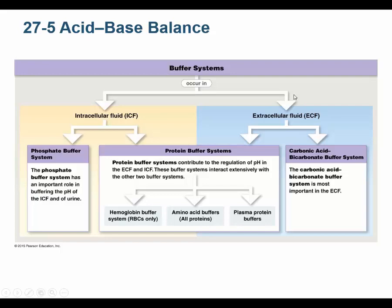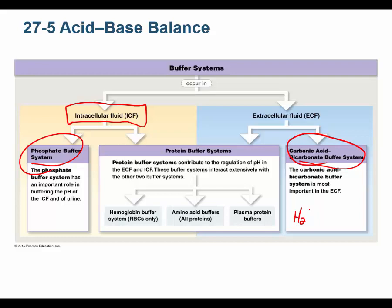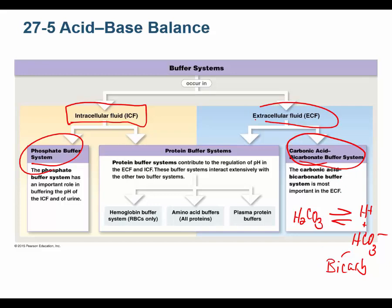There are three major buffer systems in our body that resist and counter pH changes. The phosphate buffer system is almost completely intracellular — you have very small amounts of phosphate in plasma (about 2.8 mg/dL) but lots of phosphate inside the cell; it's the major intracellular anion. The carbonic acid-bicarbonate buffer system is the main extracellular fluid buffer system in your plasma, though it can occur in cells too. And the protein buffer system operates in both intracellular and extracellular fluid. You must memorize these three systems and where they work.